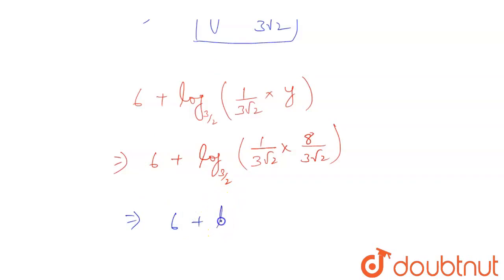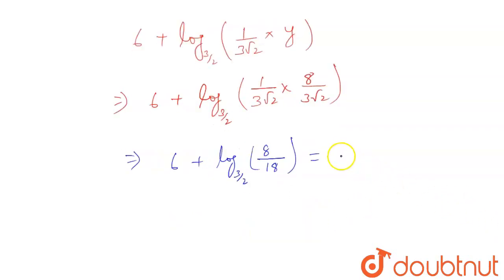6 plus log base 3 by 2. This will become 8 by 18, right? Or this can be equal to 6 plus log base 3 by 2. This 8 by 18 can be written as 4 by 9.